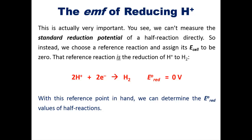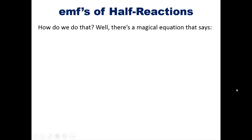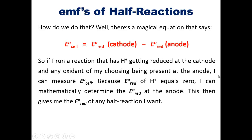With this reference point in hand, we can now determine the reduction potential values of half reactions. How do we do that? Well, there's a magical equation that says that the reduction potential of a cell is equal to the reduction potential of the cathode minus the reduction potential of the anode. So if I run a reaction that has H+ getting reduced at the cathode, and any oxidant of my choosing being present at the anode, I can measure E naught cell. Because the reduction of H+ equals zero, I can mathematically determine the reduction potential at the anode. This then gives me the reduction potential overall of any half reaction I want. Make sense? I hope.